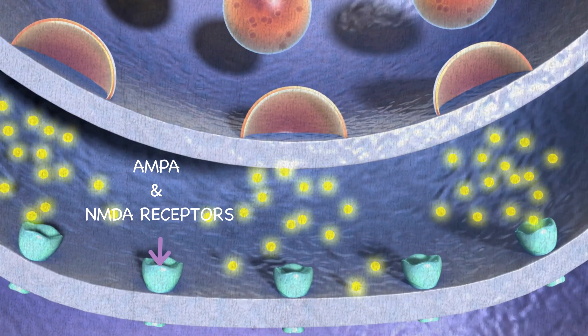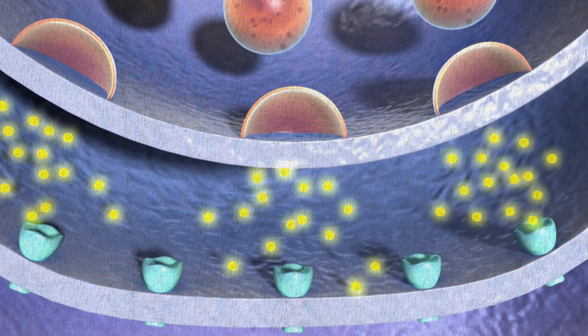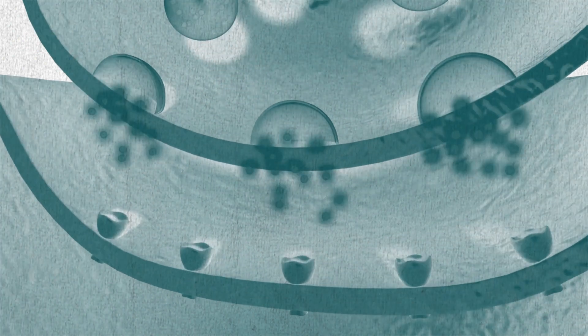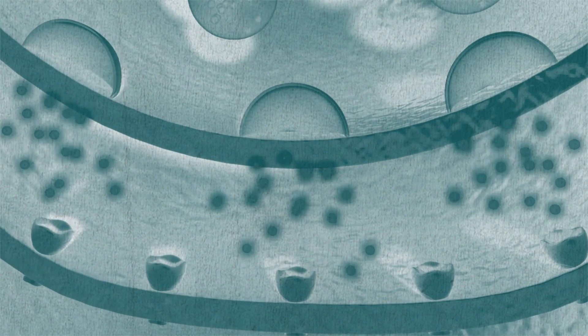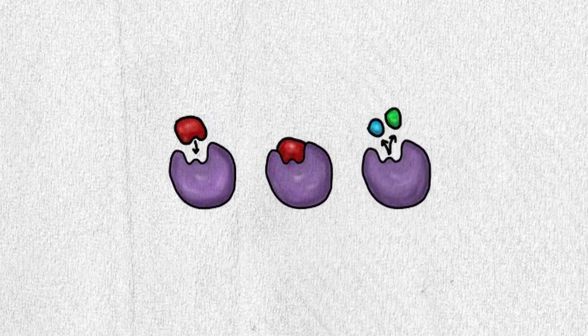This triggers the action potential, stimulating the neurons, and if this happens too much it will trigger a seizure. The GABA neurotransmitters are released into the synaptic cleft and bind to GABA-A receptors on the postsynaptic neurons, having the opposite effect to glutamate and reducing the chances of an action potential. GABA is then quickly removed and catabolized by the enzyme GABA transaminase.